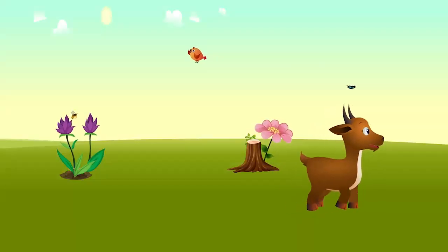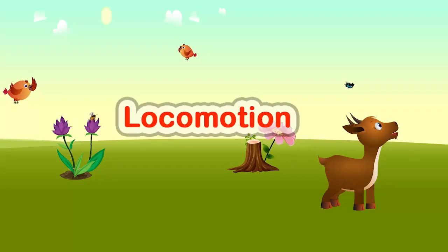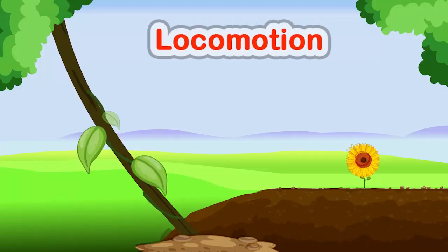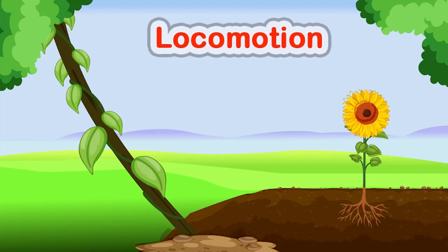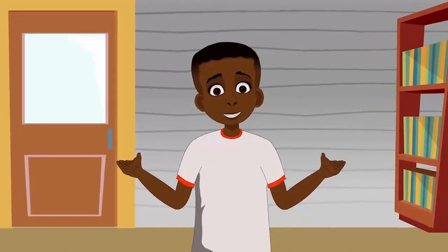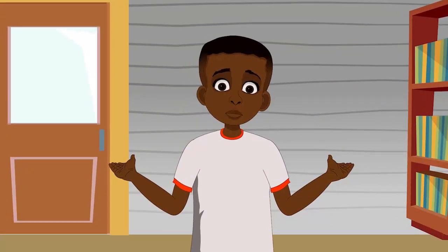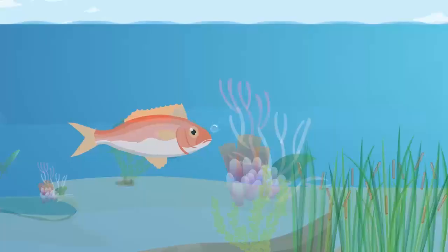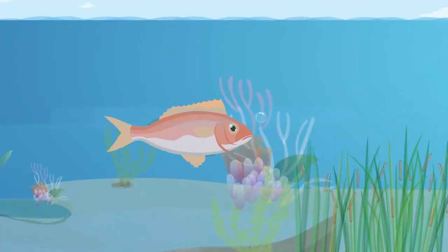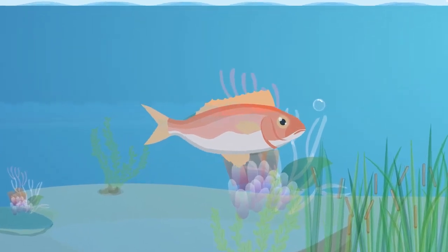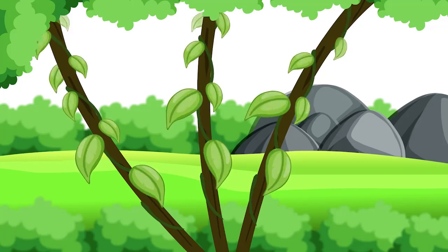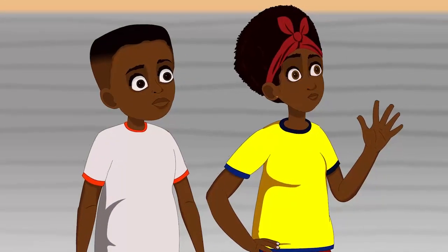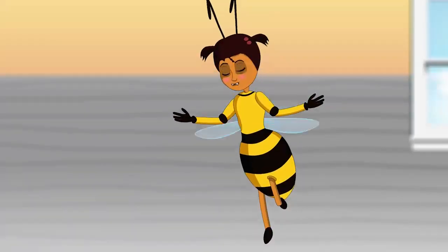Movement in most animals is called locomotion. Plants also move by their leaves, stems, and roots. Locomotion is the movement of the body from one place to another. An example of movement in animals is swimming. An example of movement in plants is climbing. I never knew plants moved. Yes, plants do move.